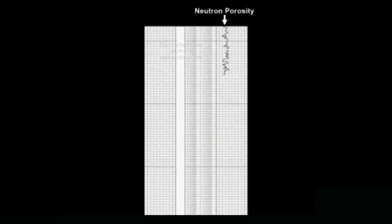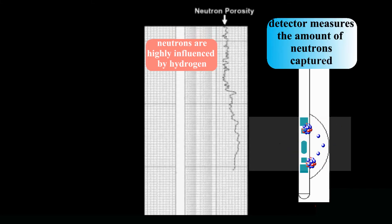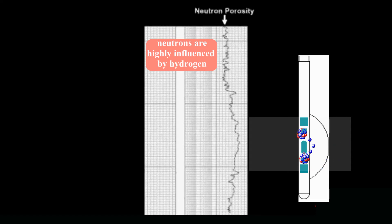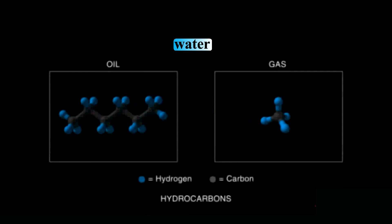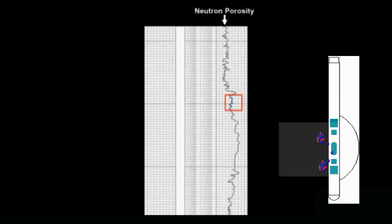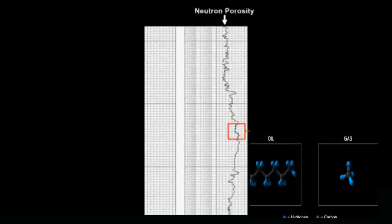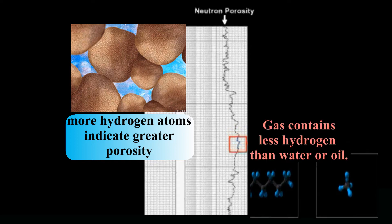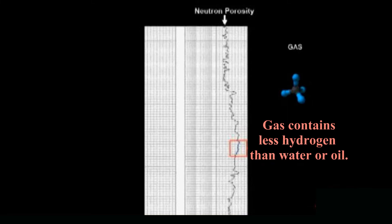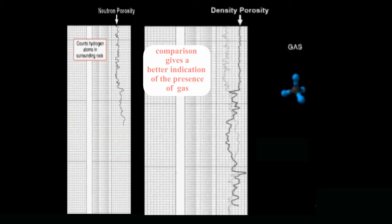Second, the neutron log records emissions from a neutron-generating radioactive source placed into the neutron sonde. A detector measures the amount of neutrons captured. Neutrons are highly influenced by the amount of hydrogen present — hydrogen found in water, oil, and gas greatly affects the capture rate. Porosity is related to the rate of capture because fluids with hydrogen are present in porous rock, so more hydrogen atoms indicate greater porosity. However, gas contains much less hydrogen than water or oil, giving a very low or false reading of porosity. This is compared with the density porosity to give a better indication of high gas saturation rather than oil saturation.